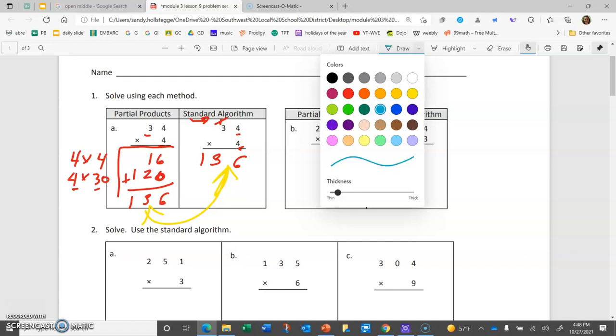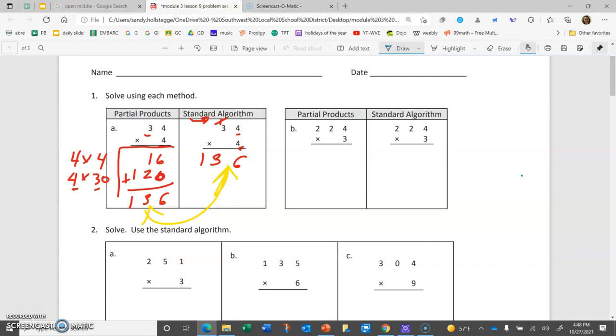Let's take a look at part B. Again, partial products and standard algorithm. I'll set up my partial products off to the left side. I'm going to be solving 3 times 4, which is 12. Then 3 times that 2, that's really a 20. 3 times 20 is 60. And then 3 times that 2, that's really 200. And 3 times 200 is 600.